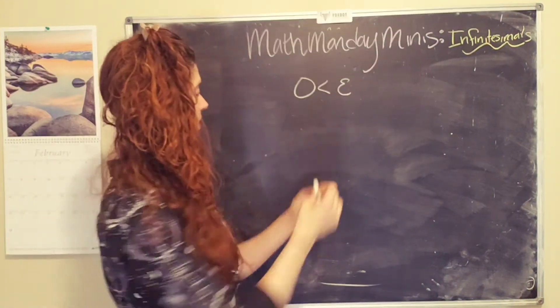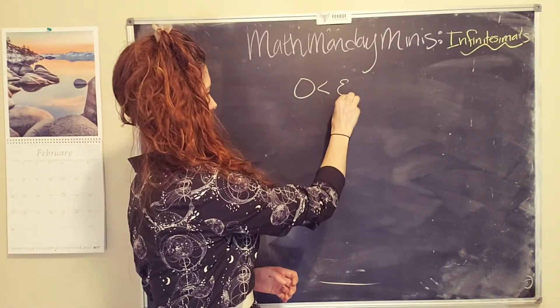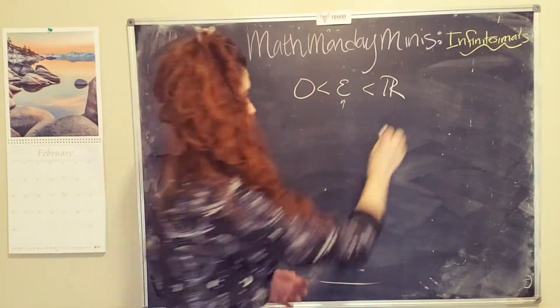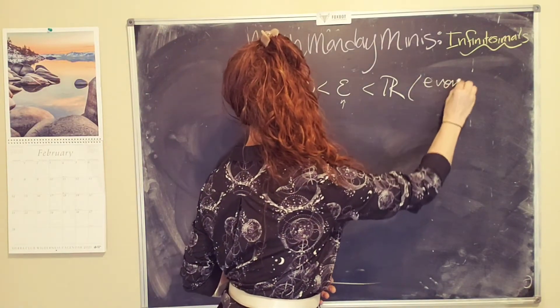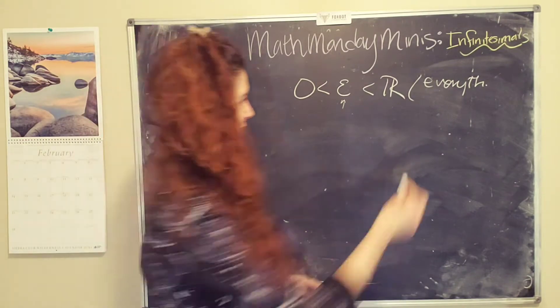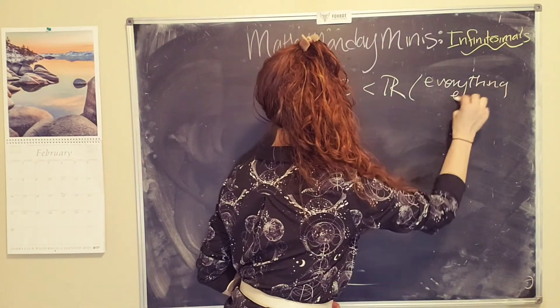I'm going to use epsilon. This is an infinitesimal, and it's defined to be less than all of the other real numbers. So you can kind of think of it as very, very small. How small? Smaller than everything else.